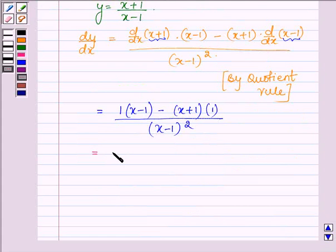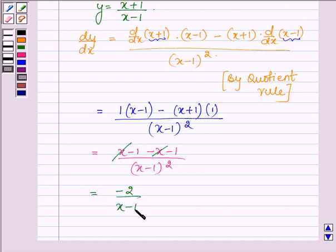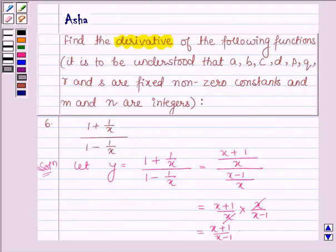This is further equal to X minus 1 minus X minus 1 upon X minus 1 whole square. Plus X minus X on cancelling we are left with minus 2 upon X minus 1 whole square.